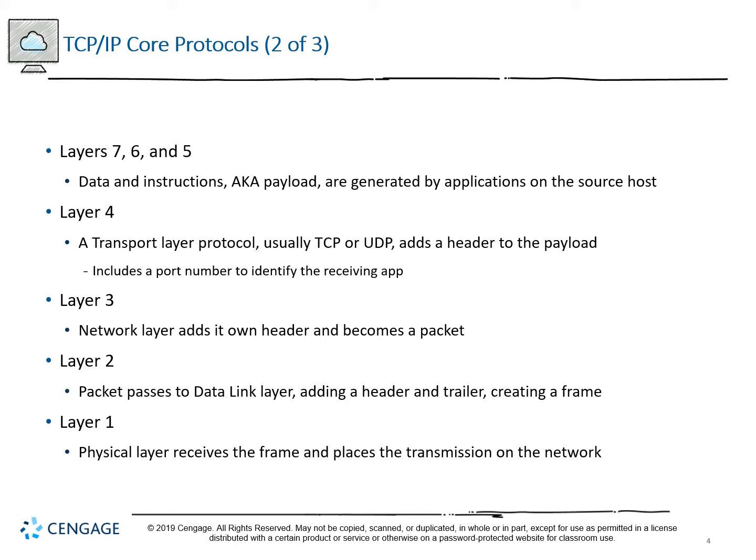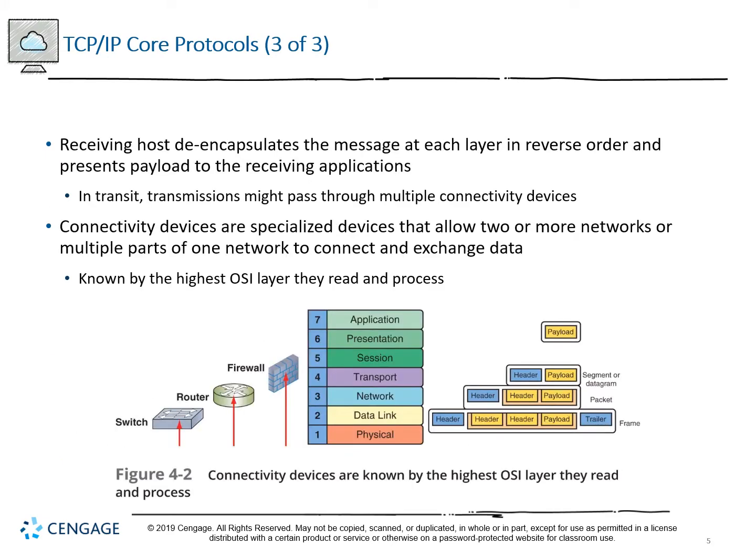At Layer 1, there are no more header or trailer conversions. The frame is received and converted into bits for transmission over the network — be it over fiber optic, cable, or through radio frequency transmission. After transmission is completed, the de-encapsulation process follows the exact same order in reverse. In certain cases we may have to pass through multiple connectivity devices, and changes will be made to the outer layers of the capsule.